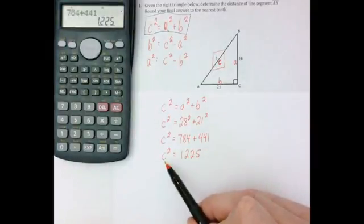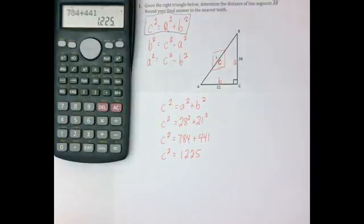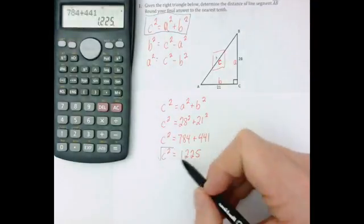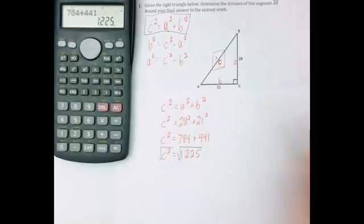Now notice that's not my answer for C. That's an answer for C squared. To get rid of that squared on the C, I take the square root. And whatever I do on one side of an equation, I have to do on the other to keep things even.